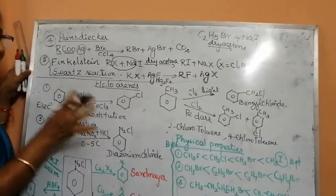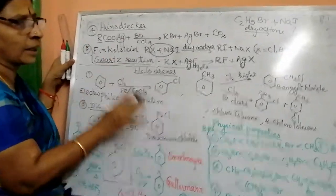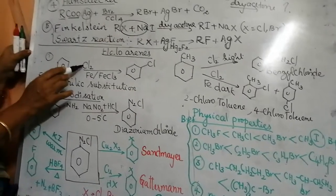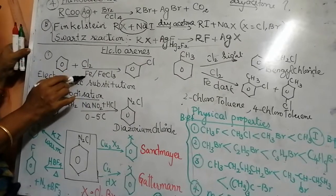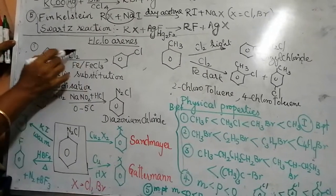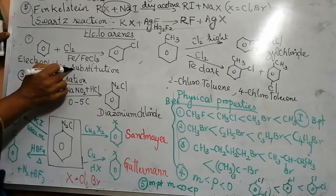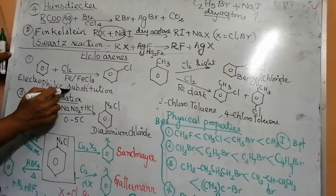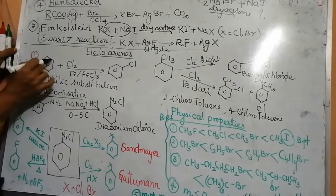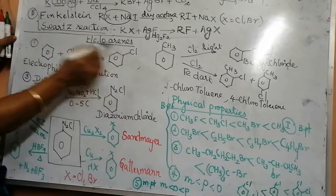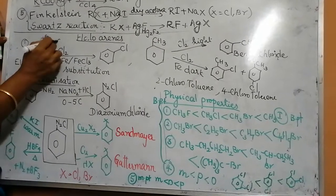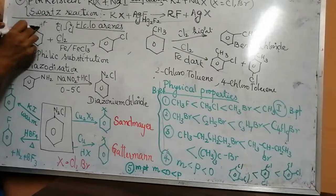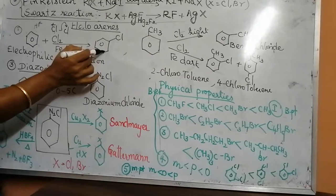Now, let us come to the haloarenes. What are haloarenes? They are nothing but aromatic halo compounds. Benzene - when benzene is treated with chlorine, either Fe or FeCl3, which are the Lewis acid, electrophilic substitution reaction will take place. We have seen in alcohol nucleophilic substitution reaction. Now we have seen electrophilic substitution reaction. The hydrogen C6H6 - one of the hydrogen in any one of the place is substituted by the Cl+. You will get chlorobenzene.